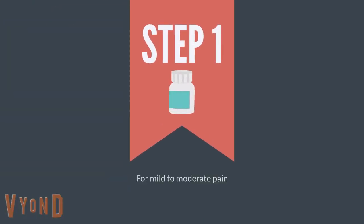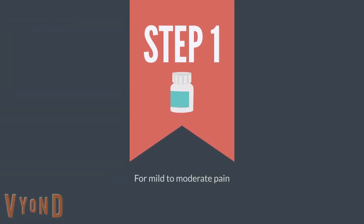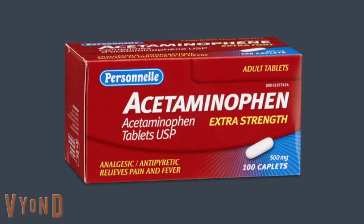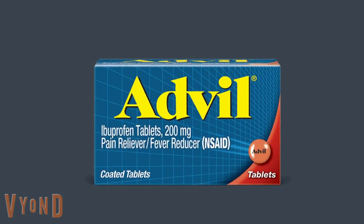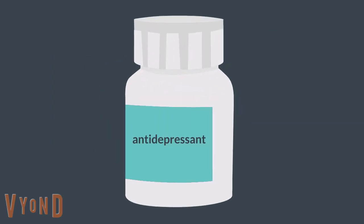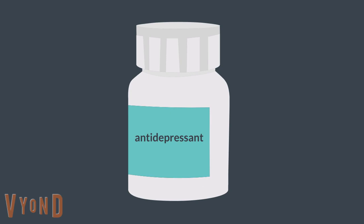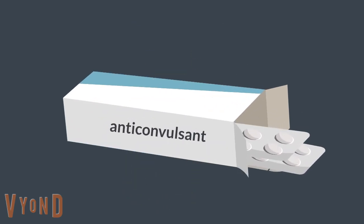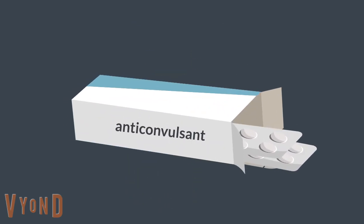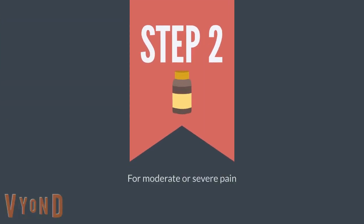Now let's make a step-by-step plan to treat patients with pain. Step 1: For mild to moderate pain, we usually start with a non-opioid, for example acetaminophen or ibuprofen, and increase the dose if necessary to the maximum recommended dose. We may use an adjuvant such as an antidepressant or anticonvulsant if indicated. However, if the patient presents with moderate or severe pain, we skip Step 1 and start with Step 2 directly.